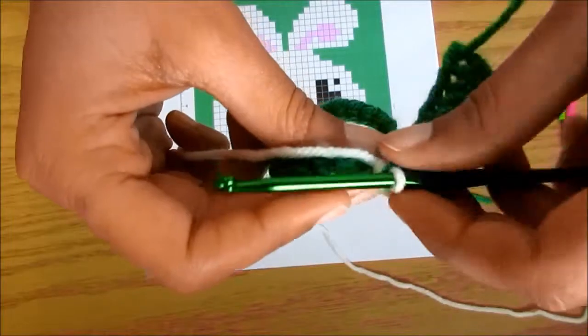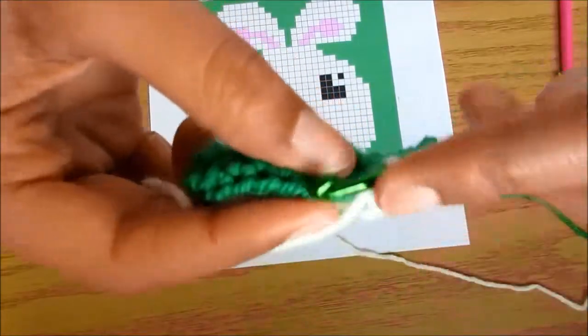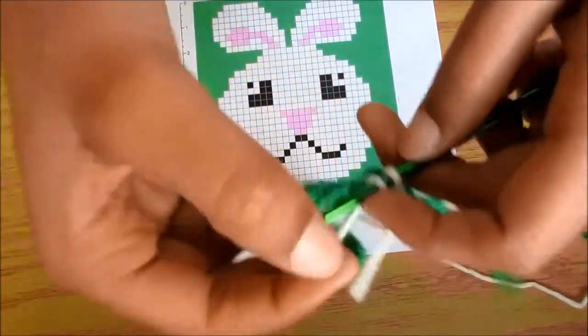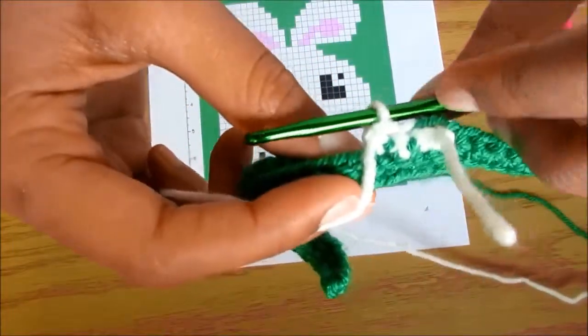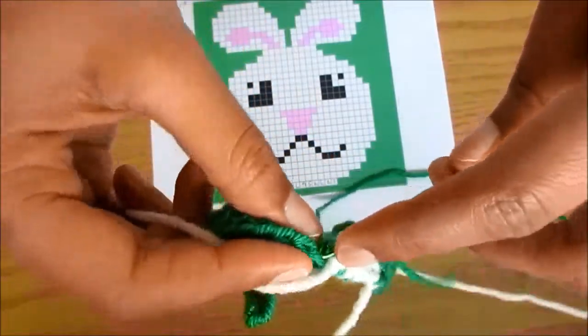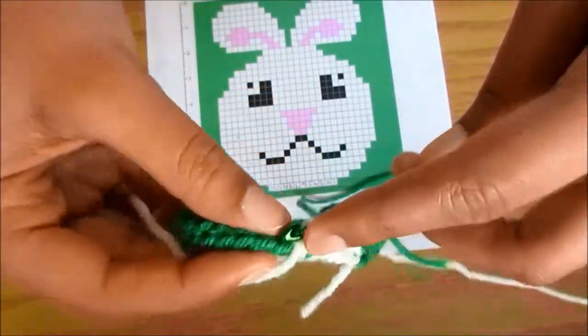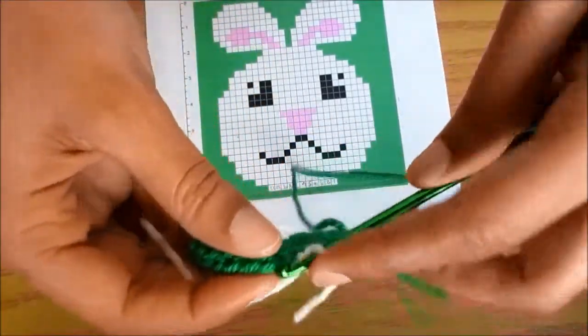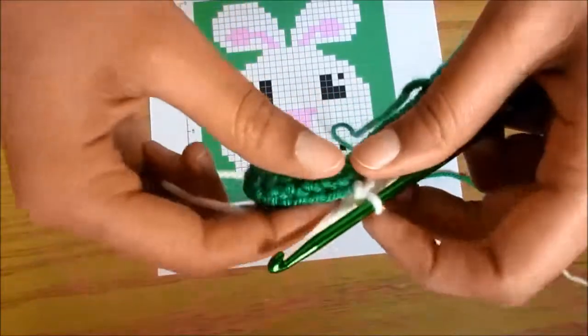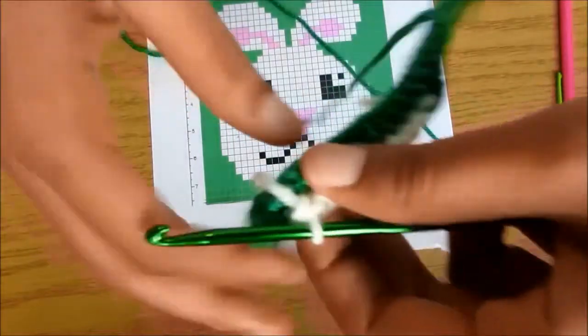And then I'm going to move on to my white. Now I have 11 white according to my pattern. So I'm going to work in the next 10 and let it carry over: 1, 2, 3, 4, 5, 6, 7, 8, 9, and 10. And my pattern is at 11. I worked in the 10. I'm going to change the green out now.